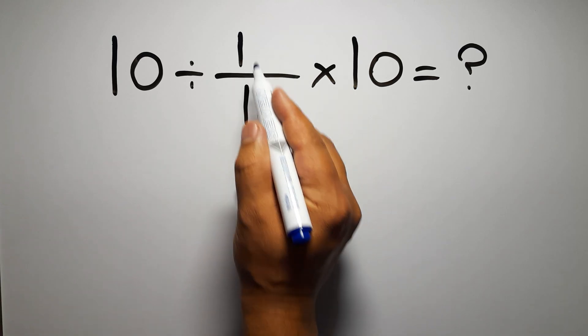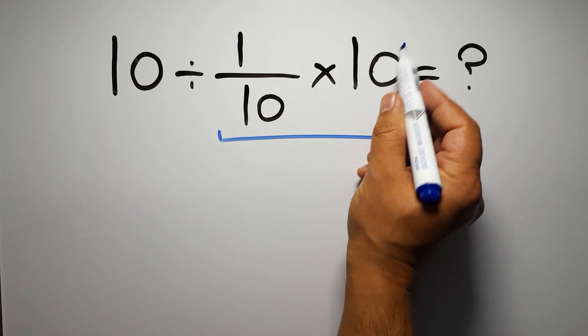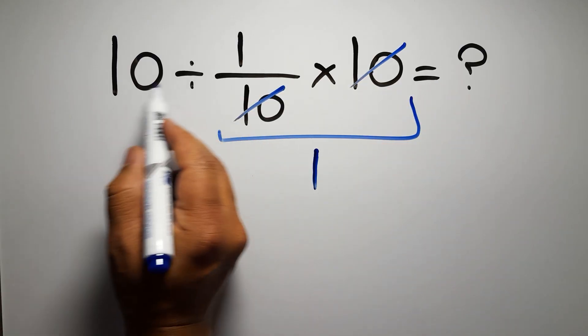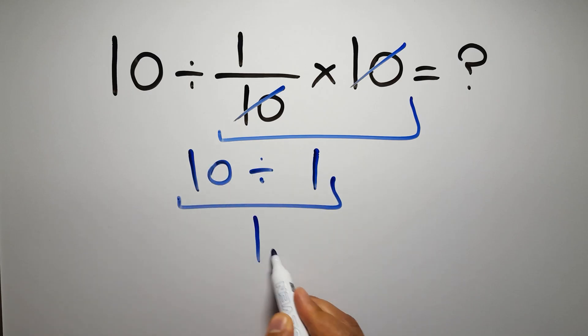First I do this multiplication, 1 over 10 times 10. You can easily cancel this 10 and this 10, so here we have just 1, and the 10 divided by 1 gives us 10. But this answer is not correct.